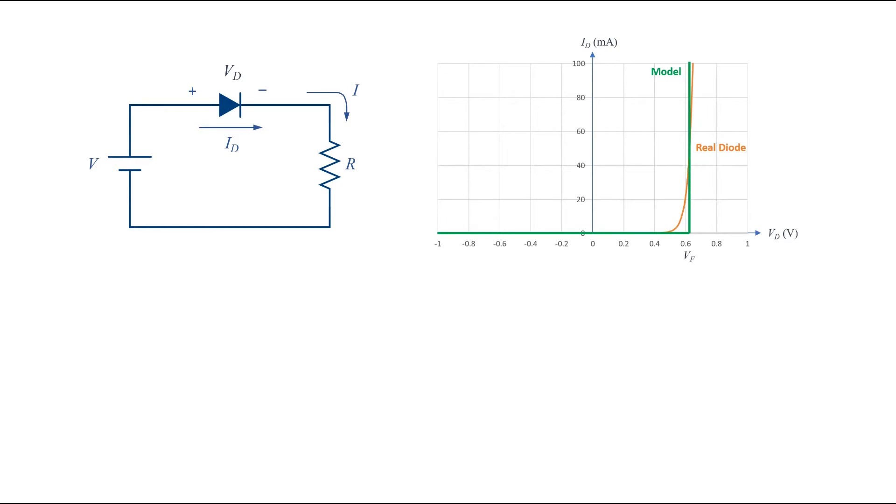It is something between 0.5 and 0.7 volts, so if we assume it is a constant voltage Vf, we are not far away from the real diode. The value of Vf is usually taken as 0.6 volts or 0.7 volts.